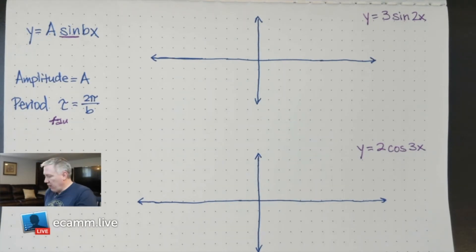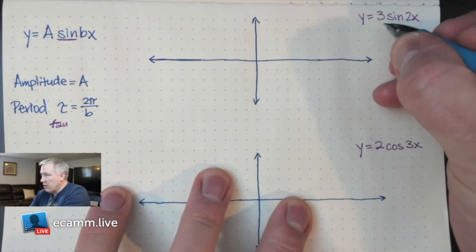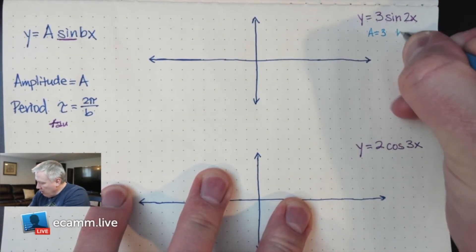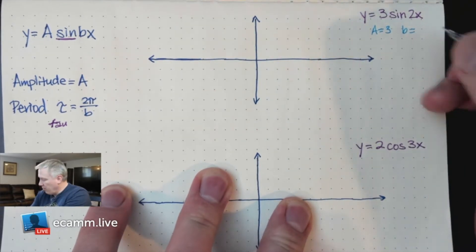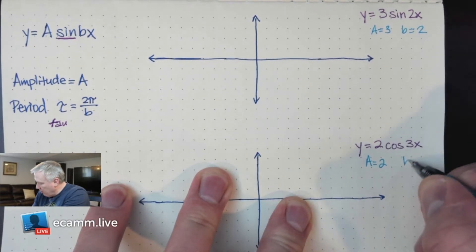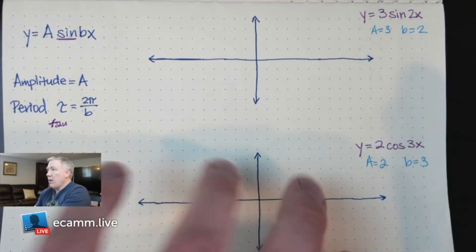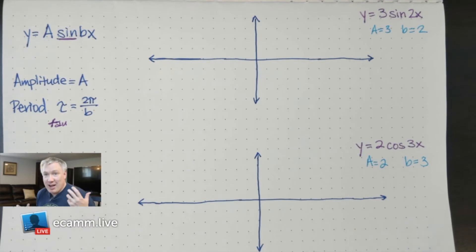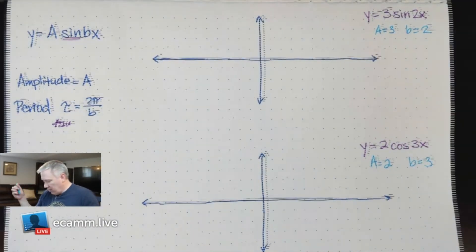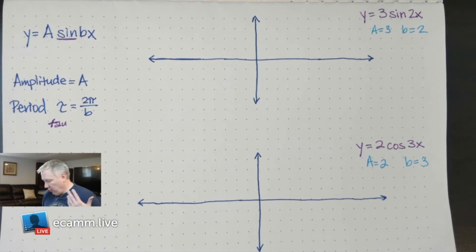Let's quickly identify what these are. If I go over here into this equation, I can see that the a is 3, and b is the number in front of x being multiplied, which is 2. Down here, a is 2 and b is 3. I don't need to plug a into anything because a is the amplitude, so the amplitude here is 3 and the amplitude here is 2.